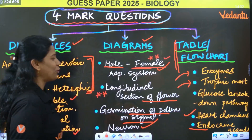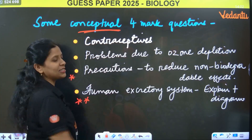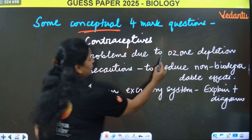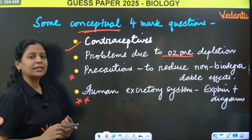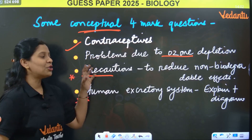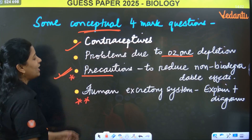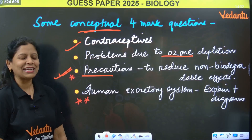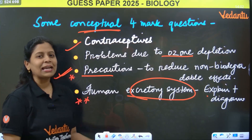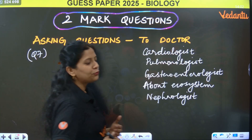These are really very, very important 4-mark questions. Apart from these, in 4 marks you can get some conceptual questions like different contraceptive methods, problems due to ozone depletion, and precautions to reduce the effect of non-biodegradable substances — very, very important. Human excretory system diagram is also very important — learn it with explanation. That was all about 4-mark questions.